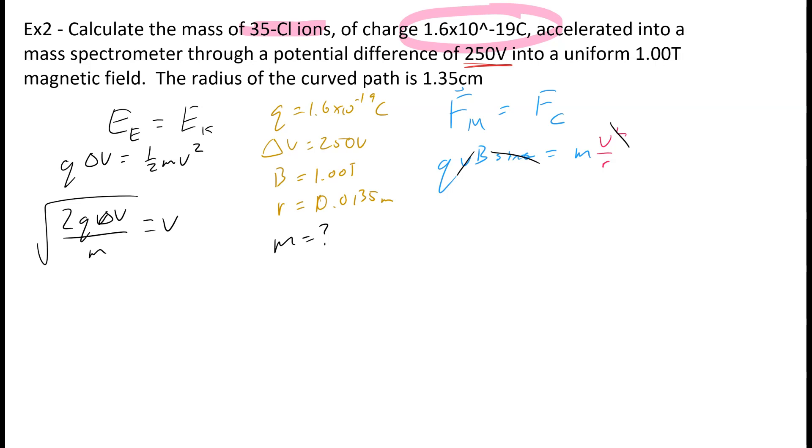So when we do the rearranging over here, we're going to end up with QBR over m is equal to V. So now I've got a V right here, and I've got a V right here. So we can make them equal to each other.